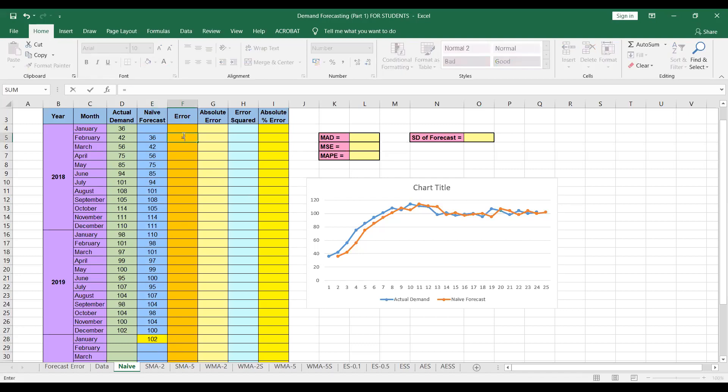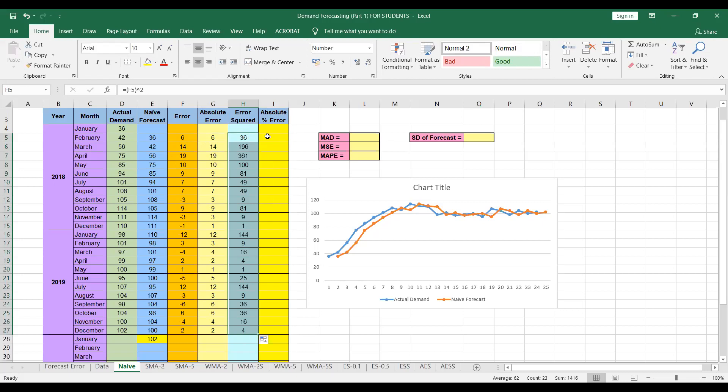The forecast error will be equal to actual minus forecast. And we can simply drag to find the error till December 2019. The absolute error will be equal to using this function abs. So absolute of this error. So you can see we have error as plus or minus. So now in absolute error, we will have error without negative sign. So we can find error squared. So this value of error squared. So we can drag to find the error for the rest of the months. And absolute percent error is absolute error divided by actual demand.